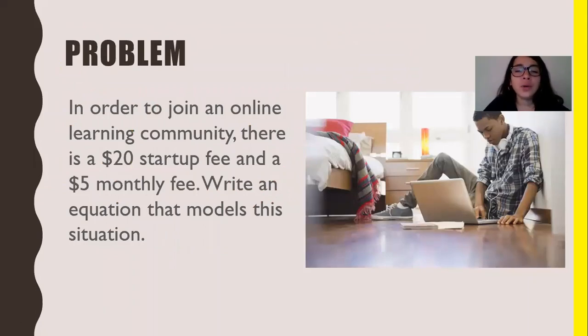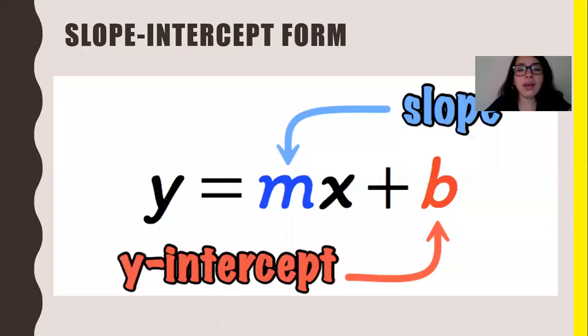So let's look at this problem. In order to join an online learning community, there's a $20 startup fee with a $5 monthly fee. Write an equation that models the situation. So on a lot of your tests that we were supposed to be taking, questions would look like this. So it's what's called a y-intercept or slope-intercept form. So y is right there, it's equal to m. Whenever they say m, they mean slope. So start thinking about it like that. M means slope. Your b means your y-intercept.